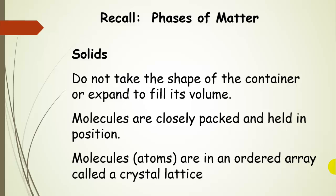So then there's solids. Now solids don't take the shape of the container or expand to fill its volume and our everyday experience tells us that. In a solid, molecules are very closely packed together and held in position by strong attractions. And so they're in an ordered array and we call that ordered array a crystal lattice. Ionic compounds form these crystal lattices.